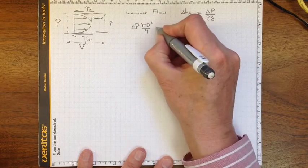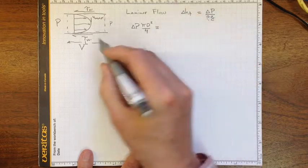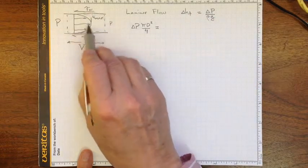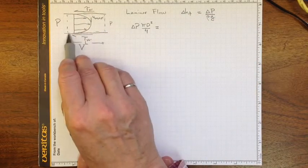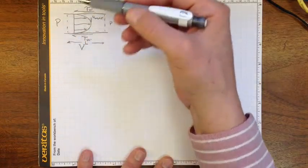It must be equal to, because there are no other forces acting, whatever the wall shear stress is that's acting over the entire surface, the exterior wall surface of the pipe.